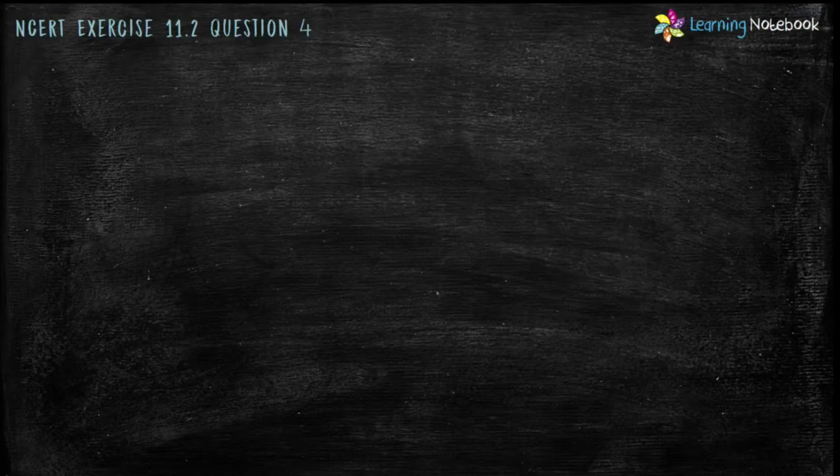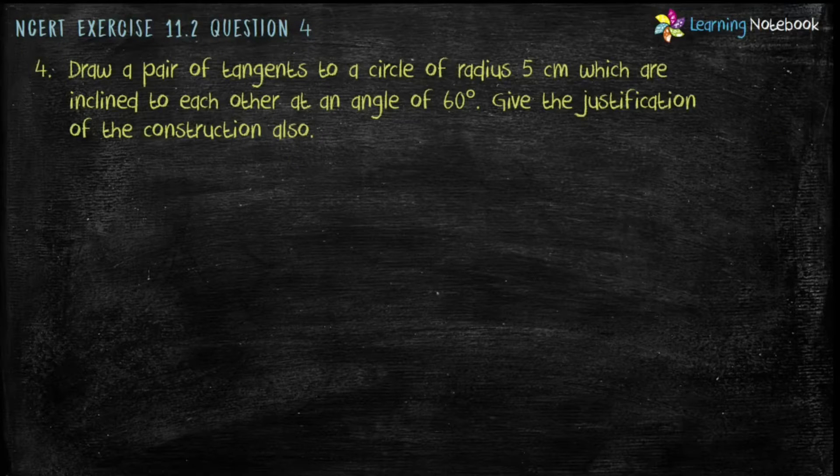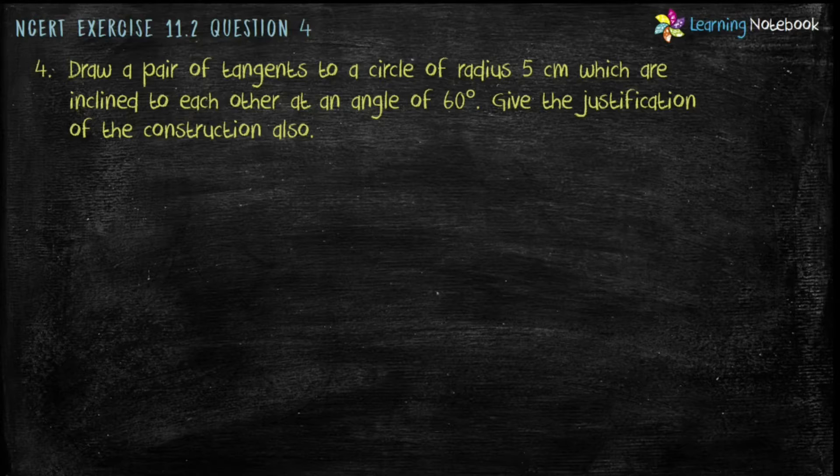Question is, draw a pair of tangents to a circle of radius 5 cm which are inclined to each other at an angle of 60 degrees. Give the justification of the construction also.